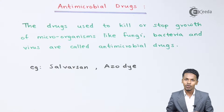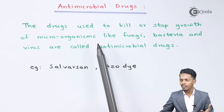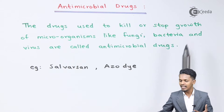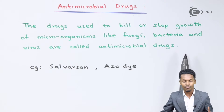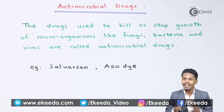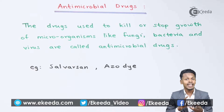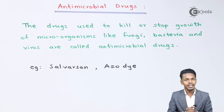Now let us understand what are antimicrobial drugs. The drugs which are used to kill or stop the growth of microorganisms like fungi, bacteria, and viruses are called antimicrobial drugs. For example, Salvarsan or Arsphenamine. Talking about other drugs that come under this classification, they are antiseptics, disinfectants, and antibiotics. So these three drugs also have a function to kill bacteria or to stop the growth of bacteria or microorganisms.